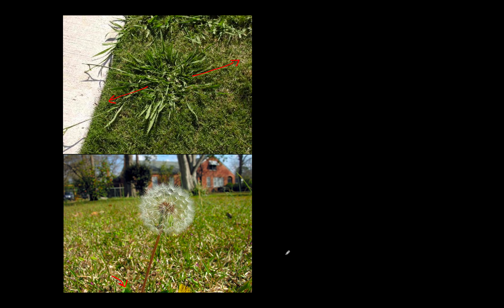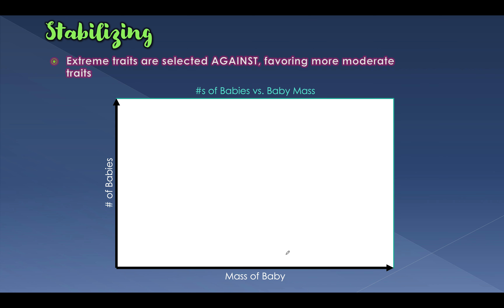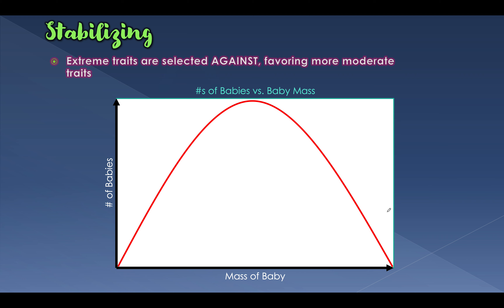Now let's talk about the opposite of disruptive selection: stabilizing selection. In the disruptive graph we saw a U-curve; stabilizing selection looks more like a bell curve, where the extreme traits are selected against. A good example is the weight of newborn babies.